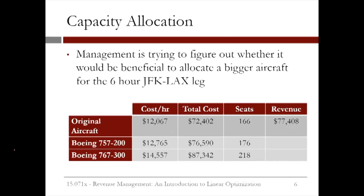Another sensitivity analysis question in our problem is whether or not it would be beneficial to allocate a bigger aircraft for this flight. This would change the capacity constraint, which currently limits the capacity to 166. With our current aircraft, the management knows that the cost per hour is $12,067. So the total cost of the six-hour flight is $72,402. With the 166 seats filled, we get a revenue of $77,408 from our optimal solution. If we increase the capacity of the aircraft to 176 seats, the total cost would increase to $76,590. And if we increase the capacity of the aircraft to 218 seats, the total cost would increase to $87,342.